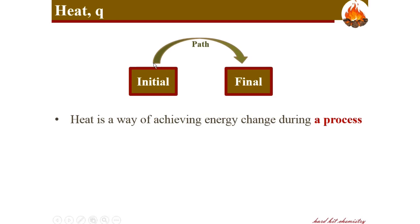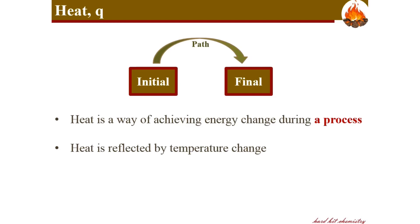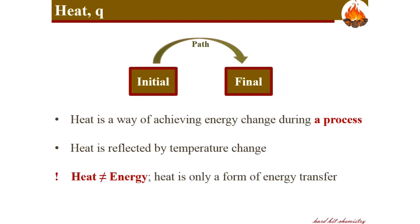Energy is a state function. It is associated with initial and final conditions of the system. When the system moves from the initial stage to the final state, the energy difference or the change can be achieved through heat, which is a form of energy transfer. Heat is reflected in temperature change — temperature is a measure of heat — and remember, heat is not identical to energy; it is only a form of energy transfer.